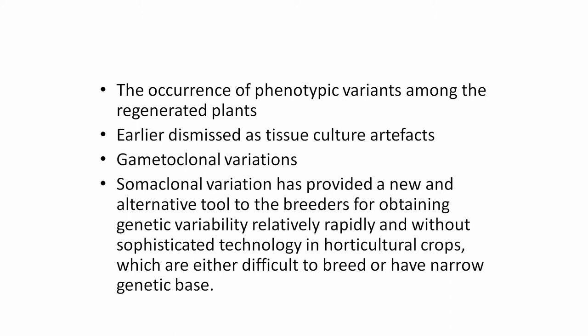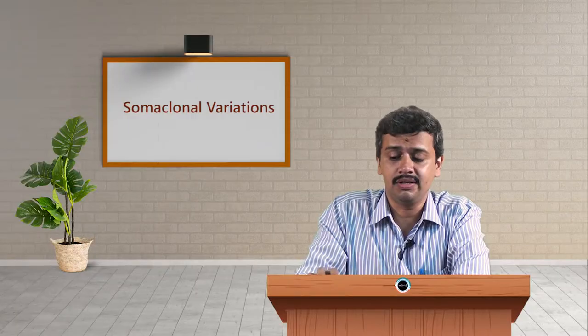In order to differentiate from the normally existing variations — which are nothing but the gametoclonal variations, where gametes are responsible for variations because of meiosis — during in vitro tissue culture conditions, many factors lead to variations, and if they result in a successful production of a new plant as a new variety or new species, these are known as somaclonal variations.